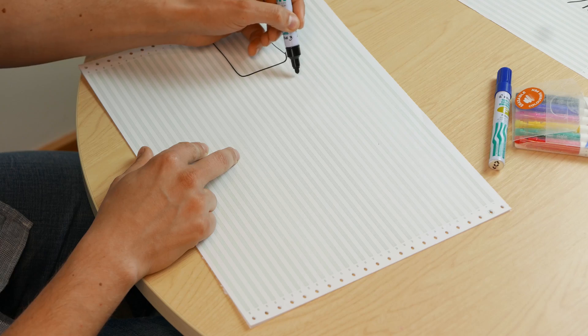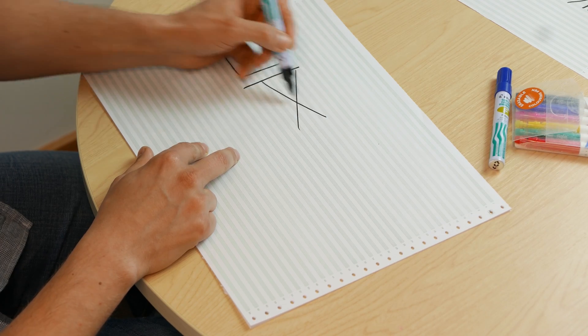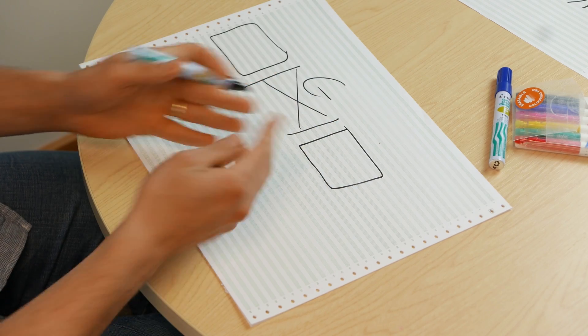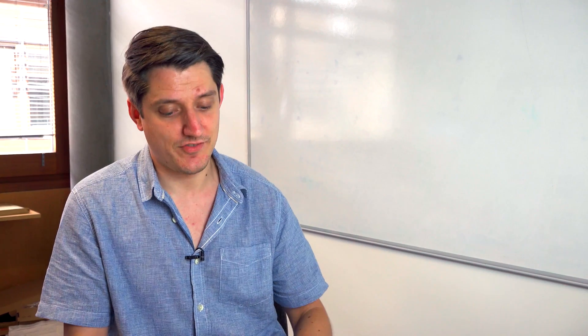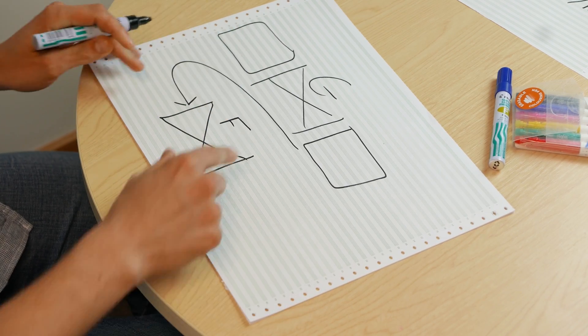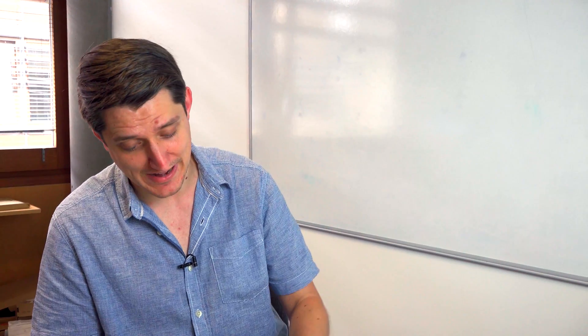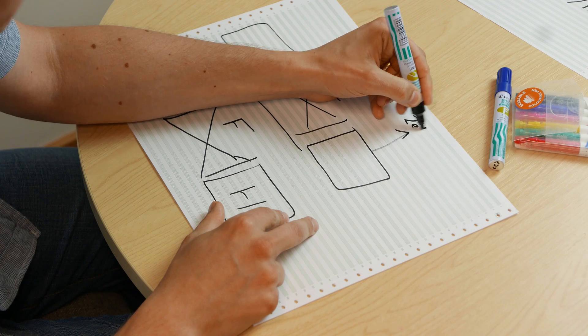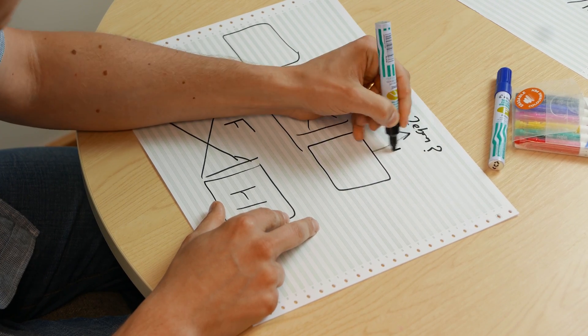This is our input, we have a generator network G, which is going to generate a picture that is of a zebra. Then we have another network, F, which is taking pictures of zebras and turning them back into pictures of horses. So there's two GANs, and there's going to be two discriminators. There's a discriminator here saying, is this a real picture of a zebra? And there's a discriminator here saying, is this a real picture of a horse?